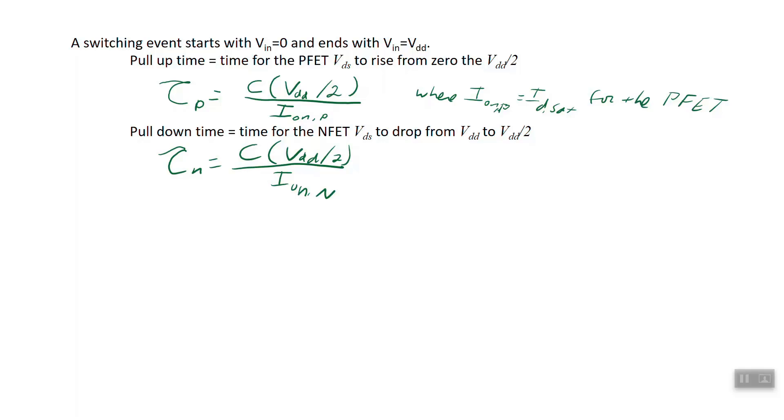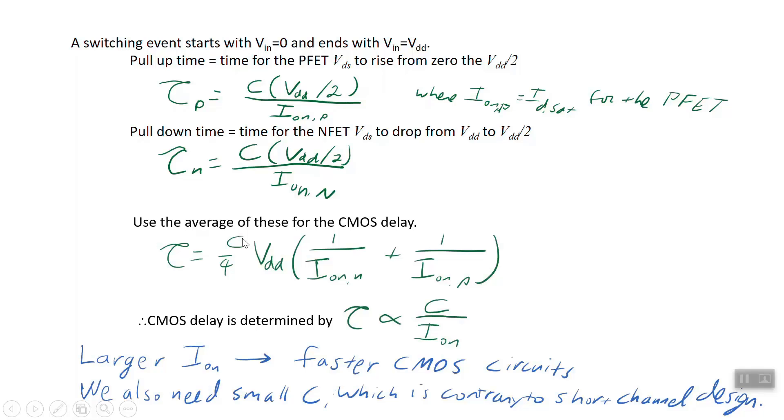PFET and the NFET don't actually do their switching in the same amount of time. Usually the average of these two is taken, and that's referred to as the switching time. We'll use the average of these and call that the CMOS delay. If you take the average of those two expressions, you'll see that this is what you have. That's why it's a four and not a two. We averaged it. The takeaway point is that the CMOS delay goes as the effective capacitance of the next gate oxides and the parasitics in the first gate divided by the saturation current of the MOSFETs.